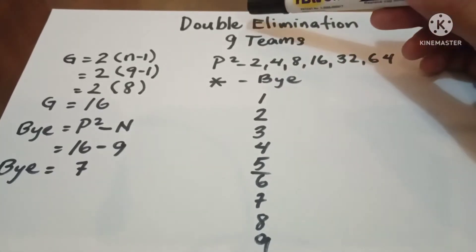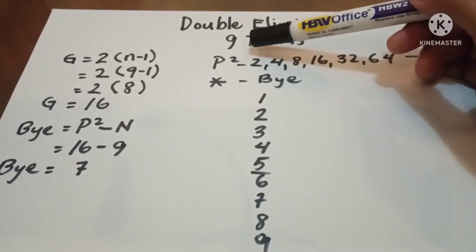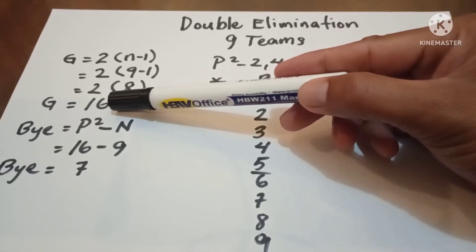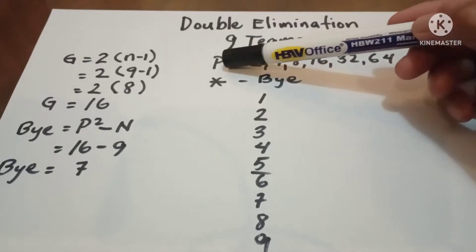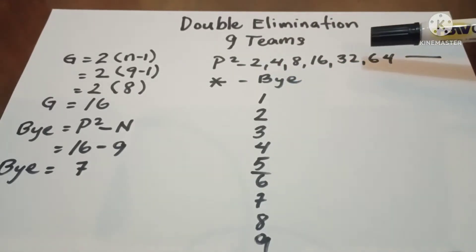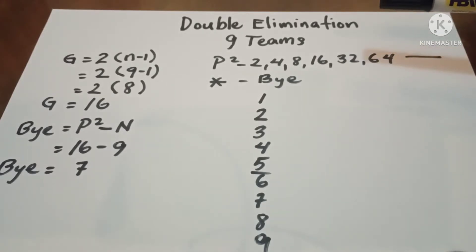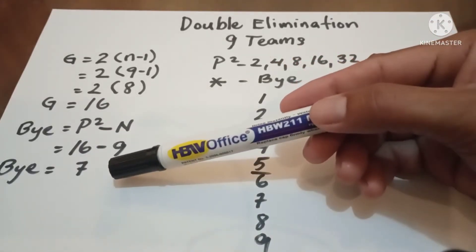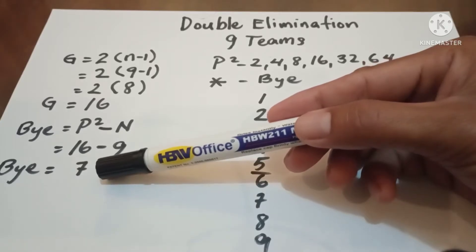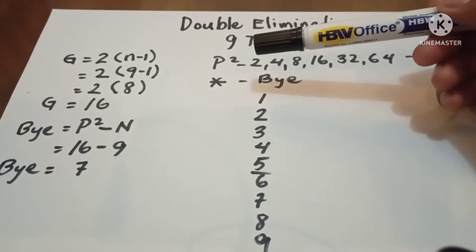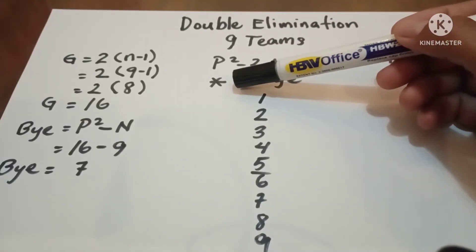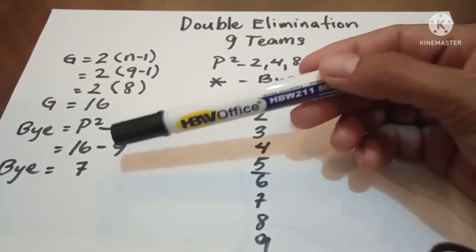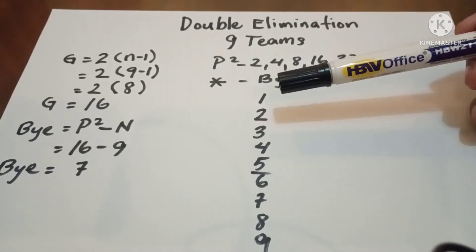Hello everyone. This is double elimination for 9 teams. In 9 teams we have 16 games. Since 9 is not included in the powers of 2, we need to determine the byes. Byes equal power of 2 minus n, meaning we have 7 byes in 9 teams. We use the asterisk to identify the bye, and since we have 7 byes, we should place all the byes properly.